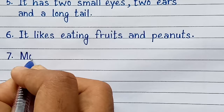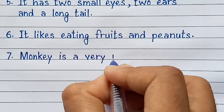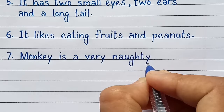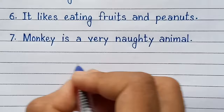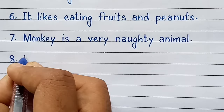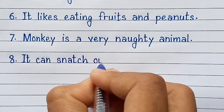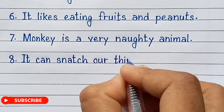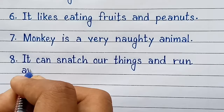Seventh line is: Monkey is a very naughty animal. Eighth line is: It can snatch our things and run away.